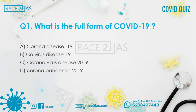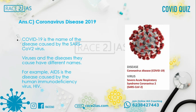Question number 1: What is the full form of COVID-19? Option A: Corona Disease 19. Option B: Co-Virus Disease 19. Option C: Corona Virus Disease 2019. Option D: Corona Pandemic 2019. The right answer is Option C. COVID-19 is the name of the disease caused by SARS-CoV-2 viruses. The diseases and the viruses that cause them have different names — for example, AIDS is the disease caused by Human Immunodeficiency Virus, HIV.